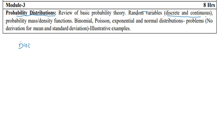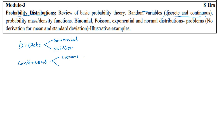When you come to continuous distribution, it is of two forms — exponential and normal distribution. One problem will definitely be on probability density function, that is PDF, which carries maximum 7 marks. For example, you may have to find the value of k, or they can give a continuous function f(x) and you should prove that it is a probability density function.